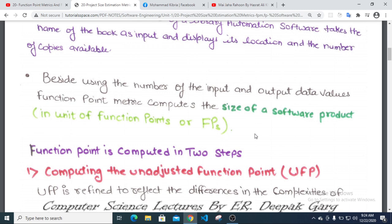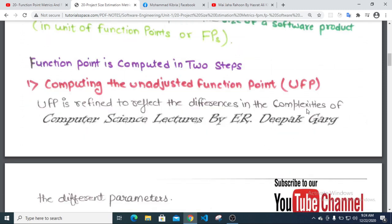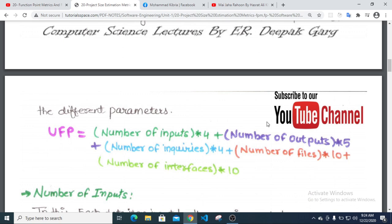Function point is computed in two steps. First, computing the unadjusted function point, which reflects the difference and complexity of the different parameters.